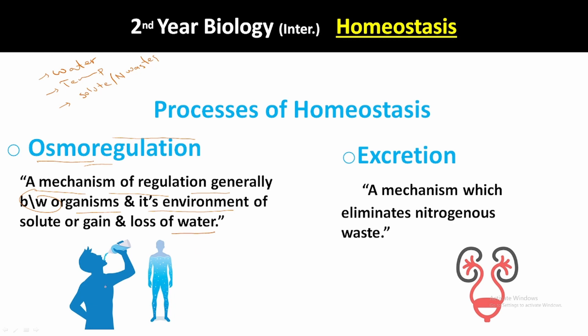Next is excretion, which means to expel out the nitrogenous waste from your body — elimination of nitrogenous waste. When you take in food, there are nitrogenous compounds that are purified in your liver from your blood, then excreted through the kidney to the bladder and out through urine. This process maintains nitrogenous balance in your body.